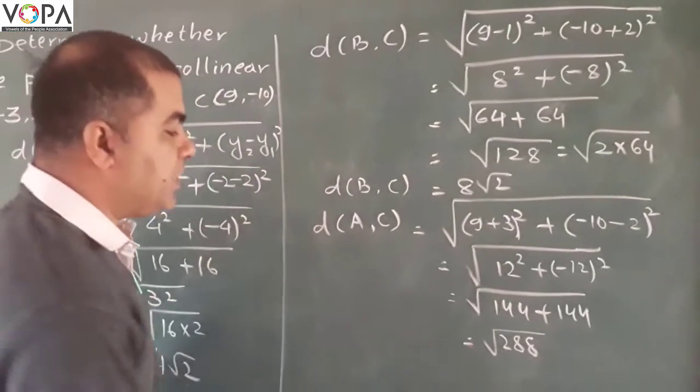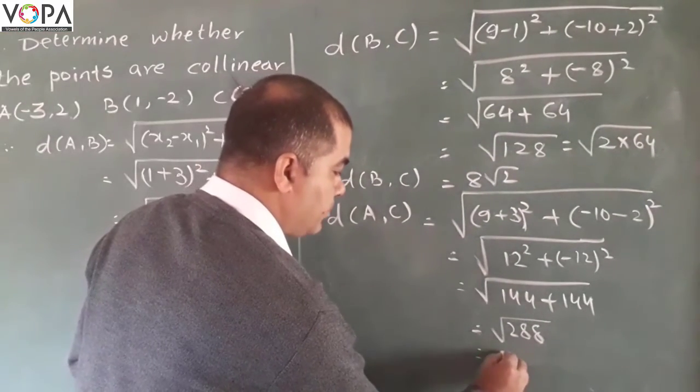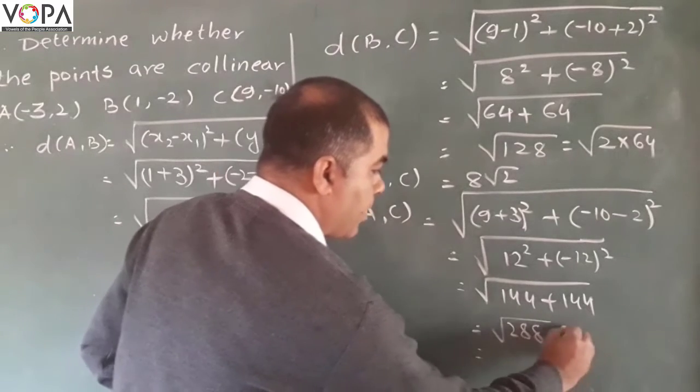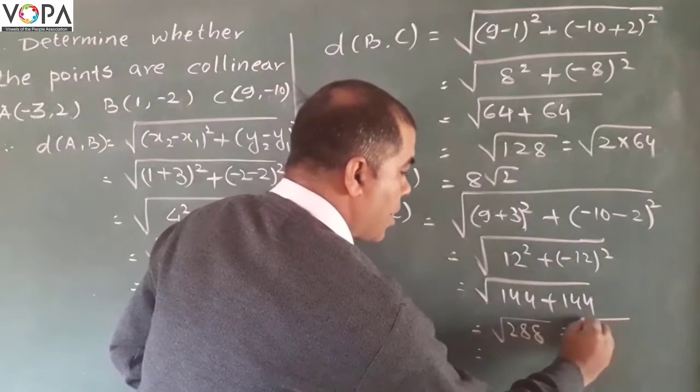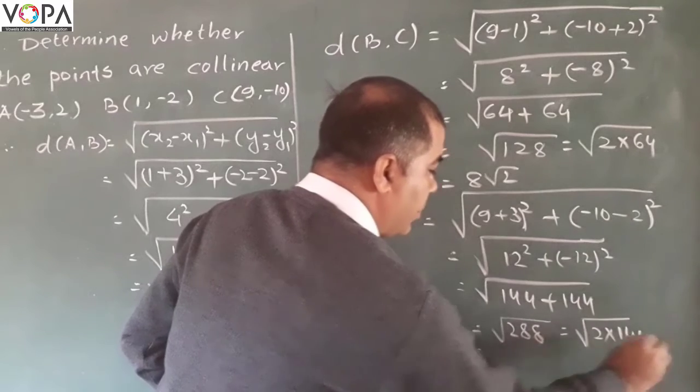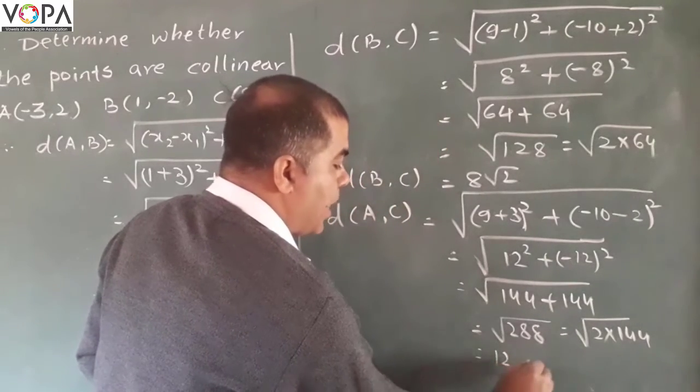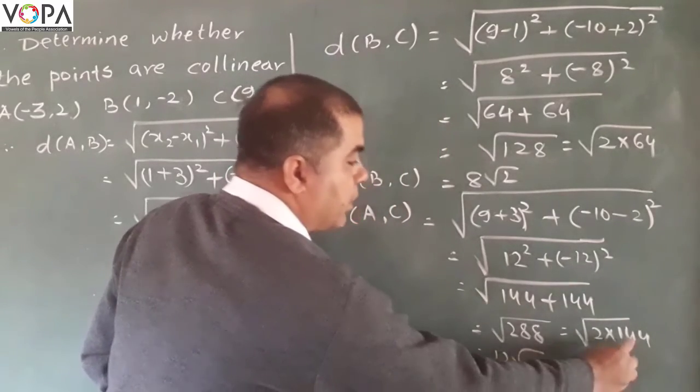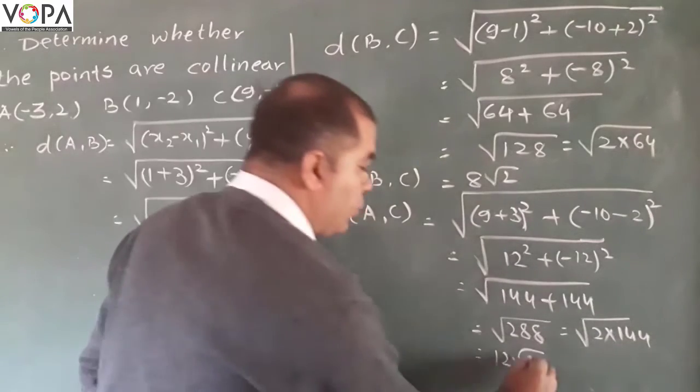Again, write it: that will be 2 times 144. It will be 12—12 squared, square root of 144 is 12, and root 2 as it is.